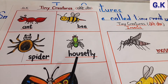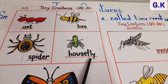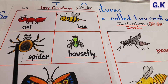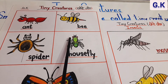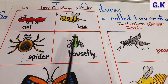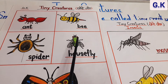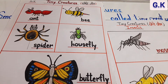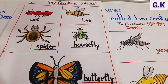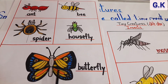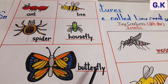Now house fly — what is the spelling of house fly? H-O-U-S-E, F-L-Y. House fly is found in our homes. They have two red eyes and two wings.